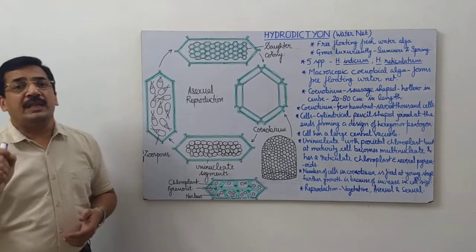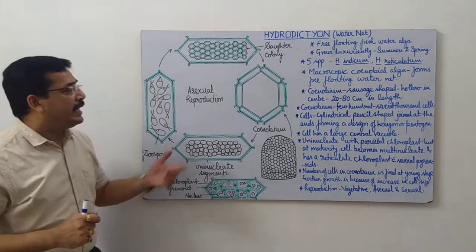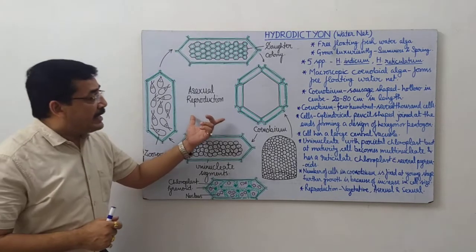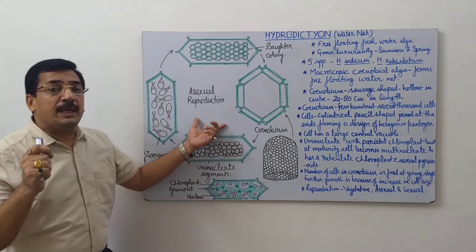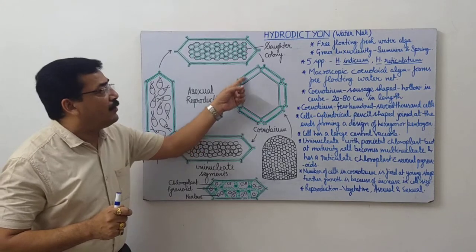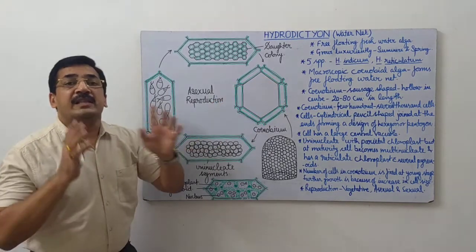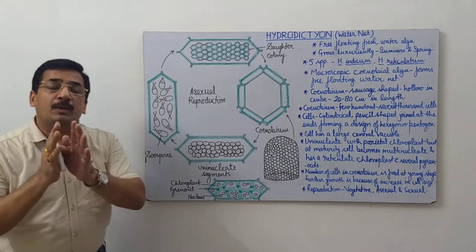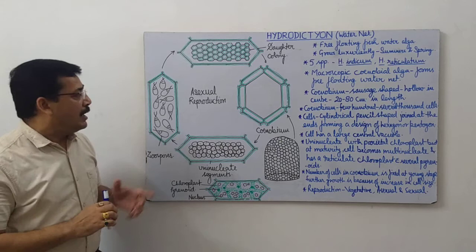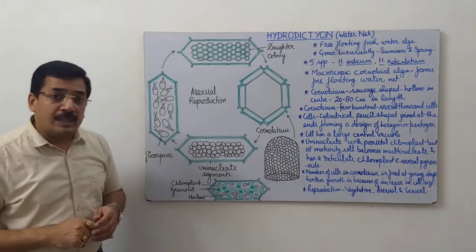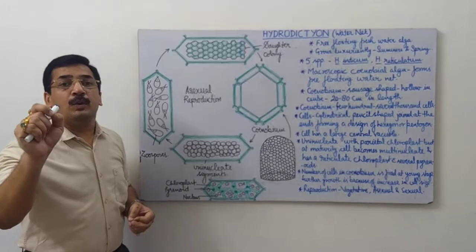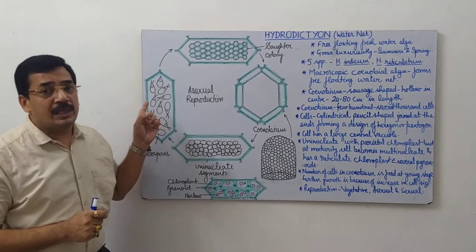In this video, we will discuss only about the asexual reproduction in Hydrodictyon. Asexual process always takes place under favorable conditions and each cell of the colony is capable to produce reproductive bodies. Asexual reproduction takes place by means of biflagellate zoospores and each cell of the colony is capable to produce these biflagellate zoospores.